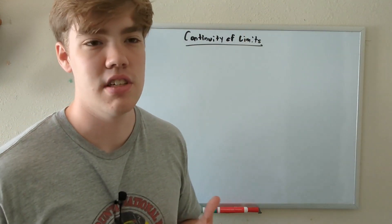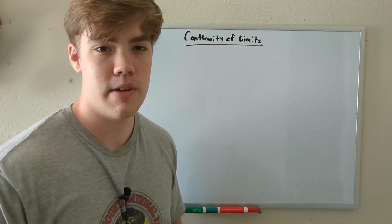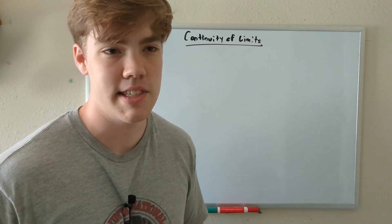We're going to prove that a function is continuous at different points along a graph. The first thing we're going to do is talk about the three rules that we can use to prove if a function is continuous at a point or not.